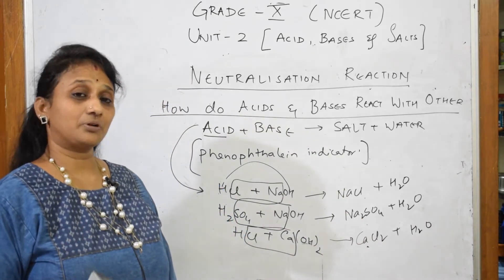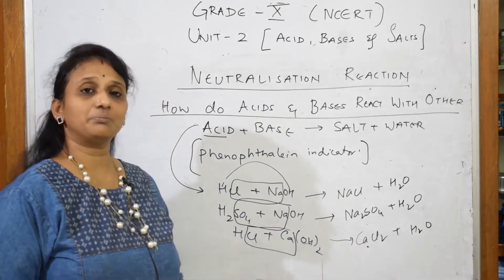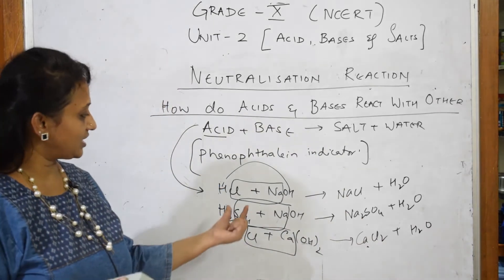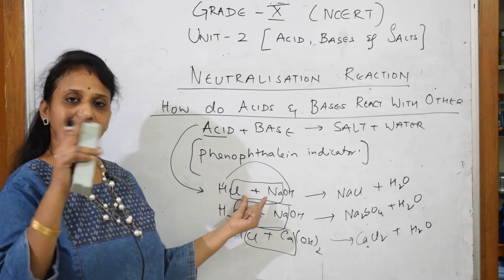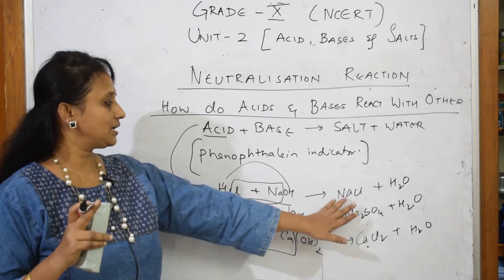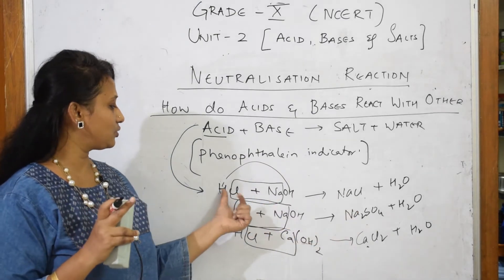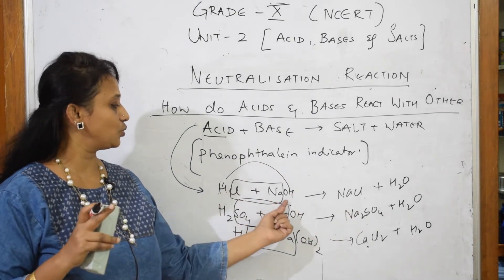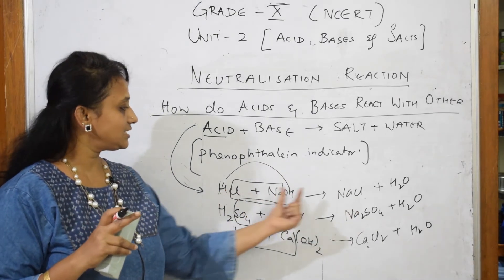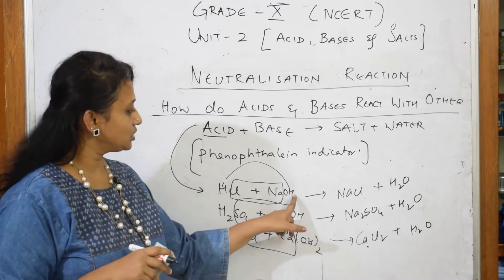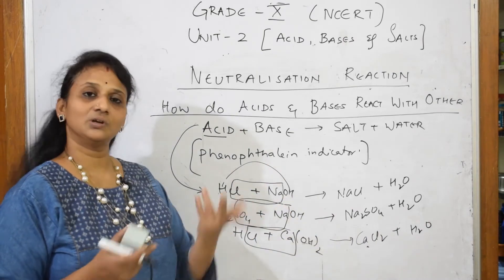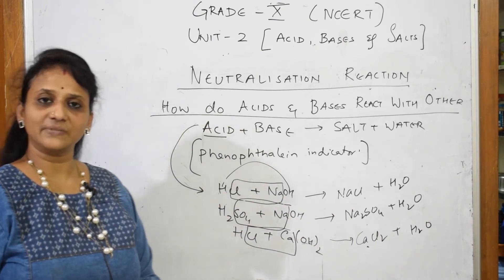The trick to remember: wherever I draw boxes, the center part should be taken out and the leftover is H₂O. For example: NaCl and H₂O. Simple, isn't it?